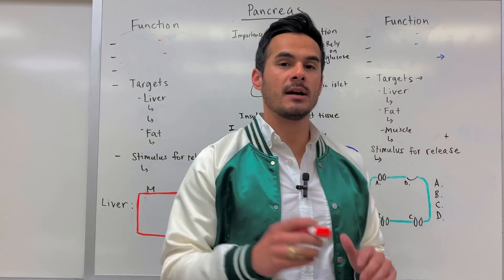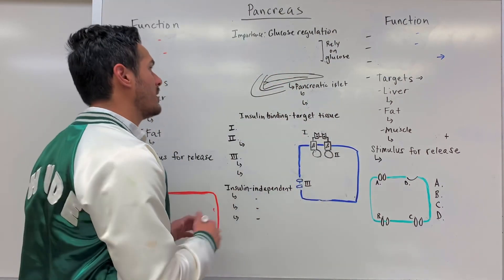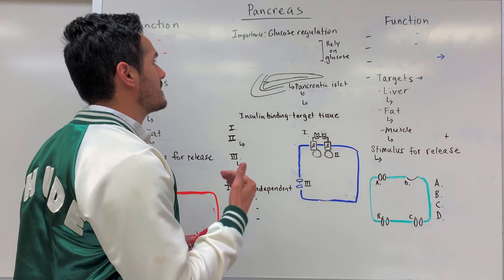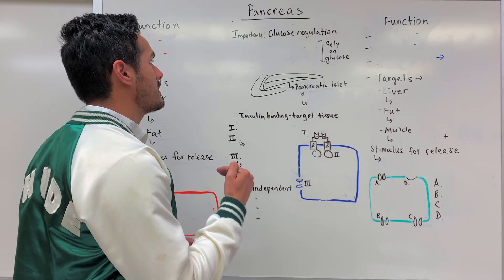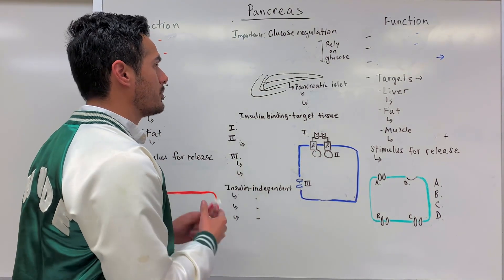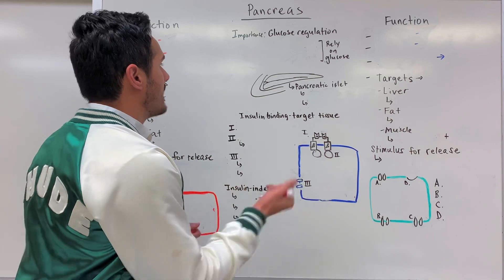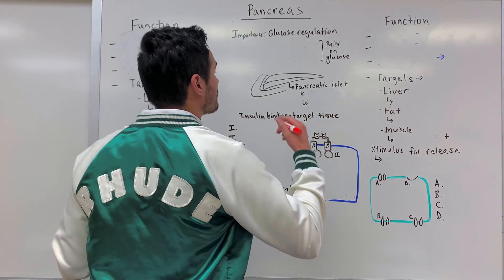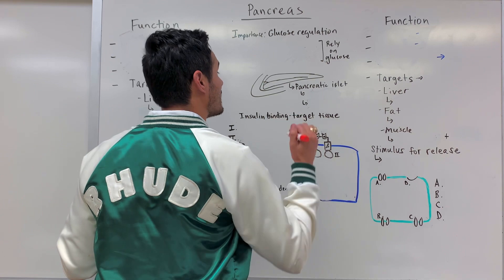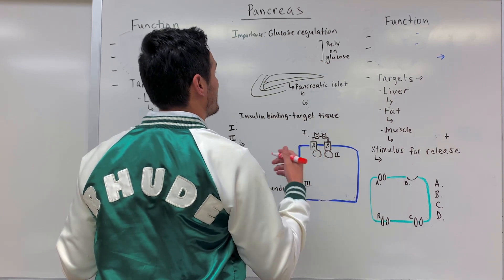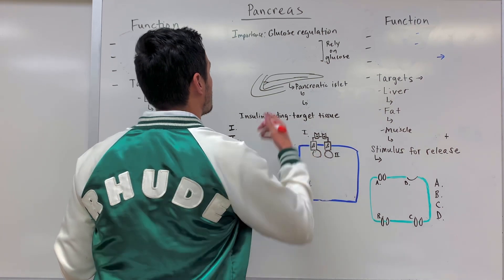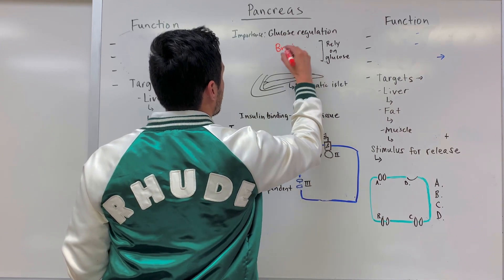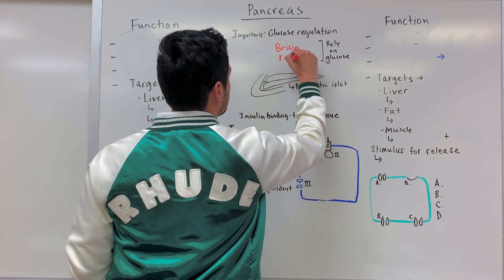The first thing I want to mention about our blood glucose levels is what's the importance — what's the significance of keeping these blood glucose levels stable? There are certain types of tissues that rely on glucose in order to meet their energy demands, including the brain as well as the retina.